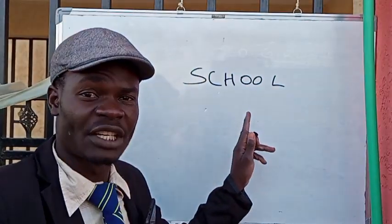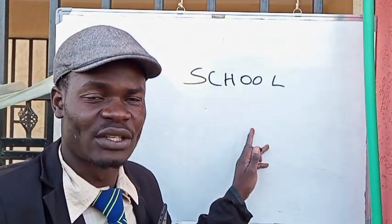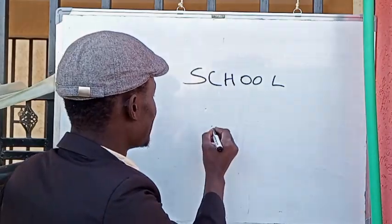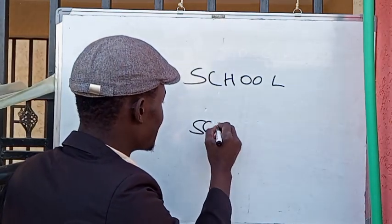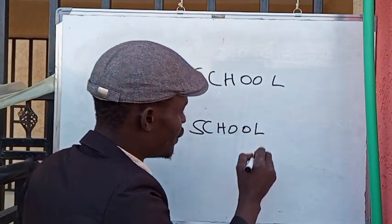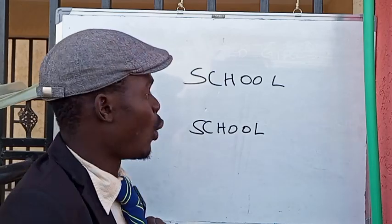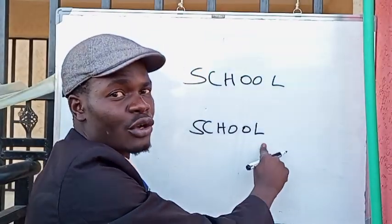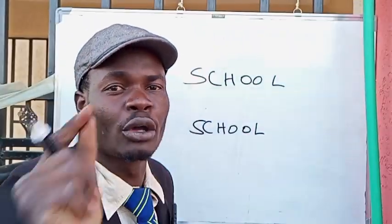This is the correct spelling of the word school, but not the second one — not this one. Why is this one correct but this one not correct?